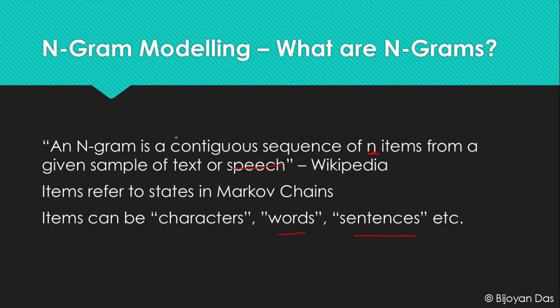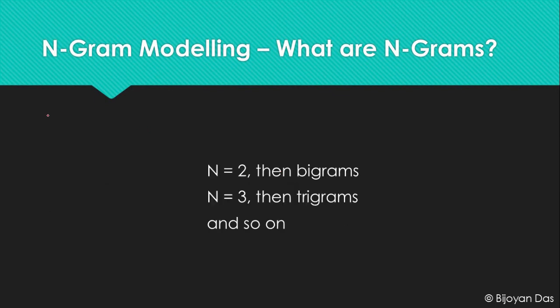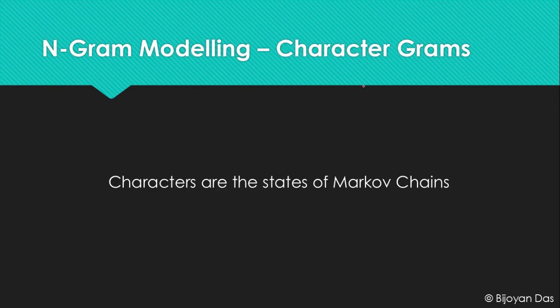When N is two we call them bigrams, and when N is three we call them trigrams. You can increase the value of N to get more grams. In the case of character n-grams, we consider characters to be the states of the Markov chain.